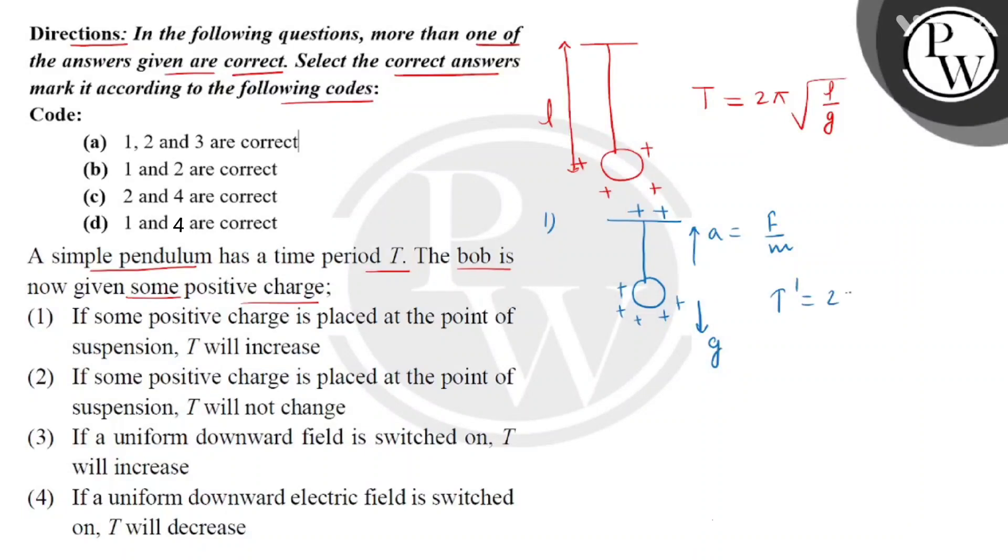When G is effective in the downward direction, we will get T dash, that is 2π square root of L divided by G minus A. Now children, we can see that the value of T dash will be more than T. So we can say that statement 1 is correct.